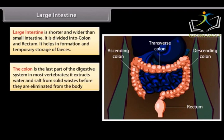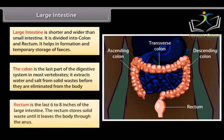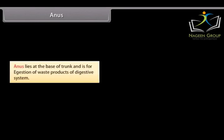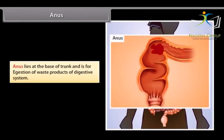The colon extracts water and salt from solid wastes before they are eliminated from the body. The rectum is the last 6 to 8 inches of the large intestine and stores solid waste until it leaves the body through the anus. The anus lies at the base of the trunk and is for egestion of waste products of the digestive system.